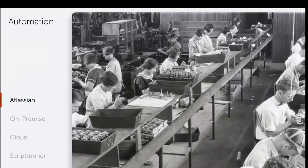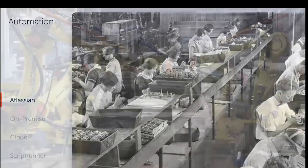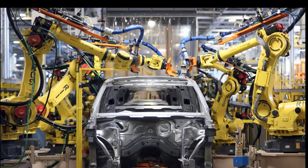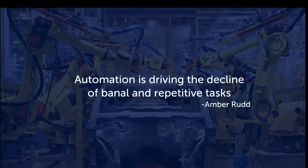We've all seen a picture like this — something from the early 1900s of people doing the same thing over and over. We waste a lot of time doing simple, repetitive, boring things. Automation was always this idea of striving for more efficiency. To quote Amber Rod: 'Automation is driving the decline of banal and repetitive tasks.' The idea was to stop doing things that happen every day and start doing creative things.